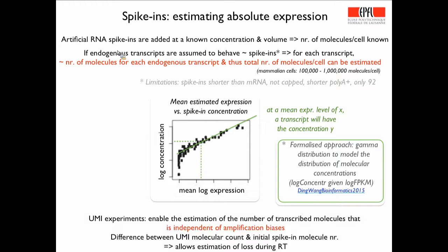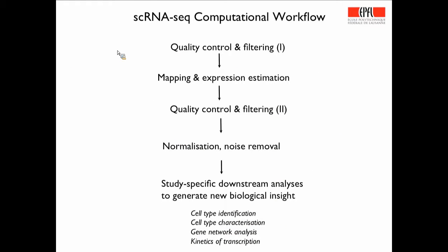Putting UMIs and spike-ins together: with UMIs you can estimate the number of transcribed molecules independent of amplification bias. Then using the difference between the UMI molecular count and the initial spike-in molecule number, you can also estimate how much sample material was lost during reverse transcription.